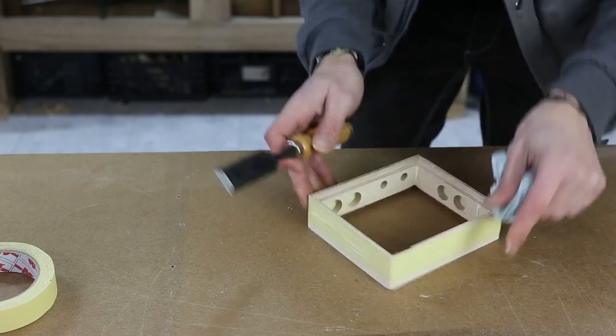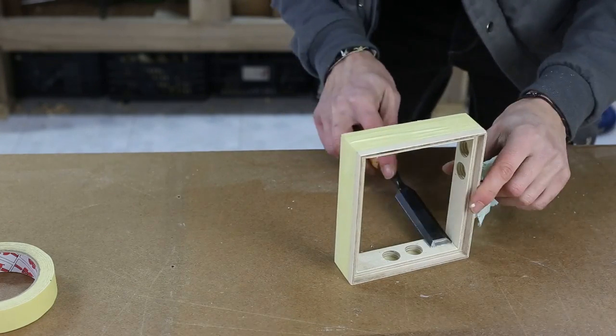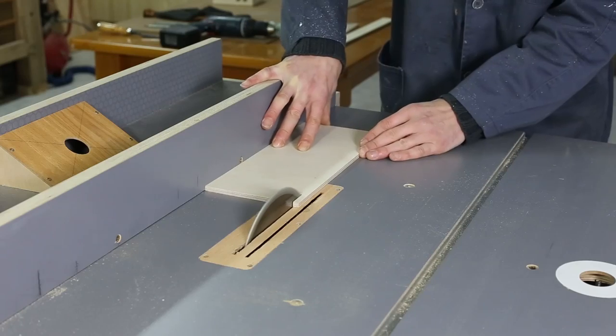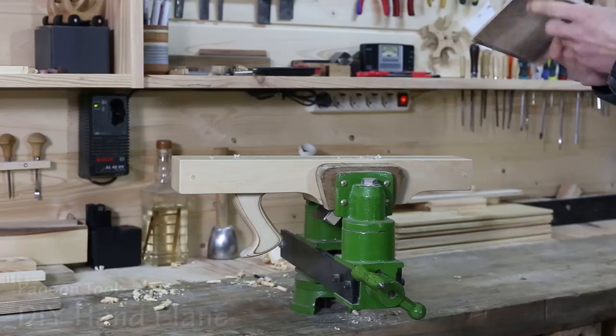Remove the remains of the glue and check if it is squared. Cut the base and cover and use a hand plane if needed.